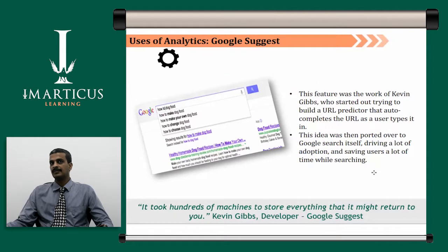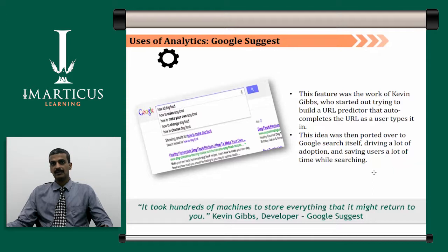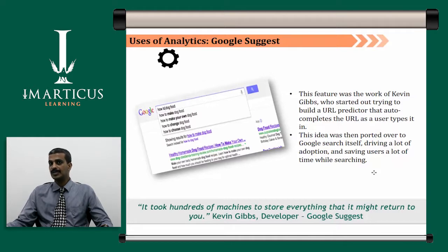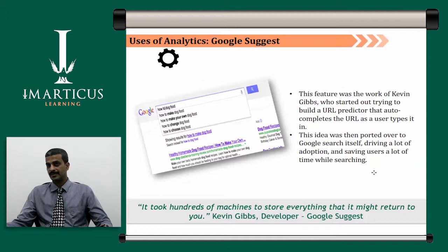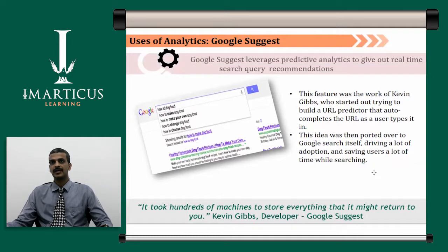This feature was the work of Kevin Gibbs in Google Suggest. He started by trying to build a URL predictor that auto-completes the URL as a user types it. Nowadays in Google, when you type something before completing your search word, certain suggestions pop up. Based on previous searches done by other people, they see all frequently searched keywords in their repository. When a new user types in, they predict what keyword the user might type and give suggestions in the suggestion box, saving users a lot of time while searching.